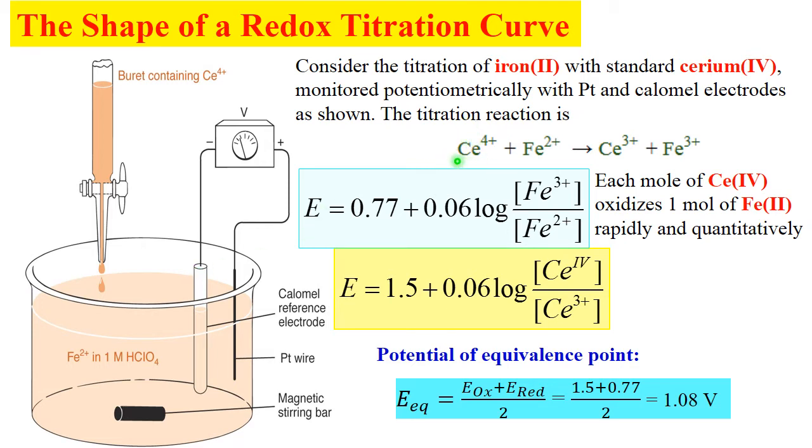Titration reaction is very simple. Ce4+ plus Fe2+ makes Ce3+ and Fe3+. One electron jumps from iron onto cerium. One mole of cerium 4 oxidizes one mole of Fe2+ rapidly and quantitatively.